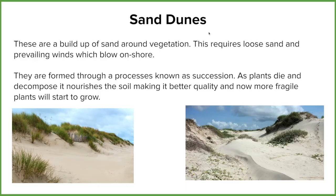A sand dune is a build-up of sand around vegetation. It requires two main factors: we need loose sand, which we find at the beach, and we need a prevailing wind that blows onshore, which we also find at the beach.